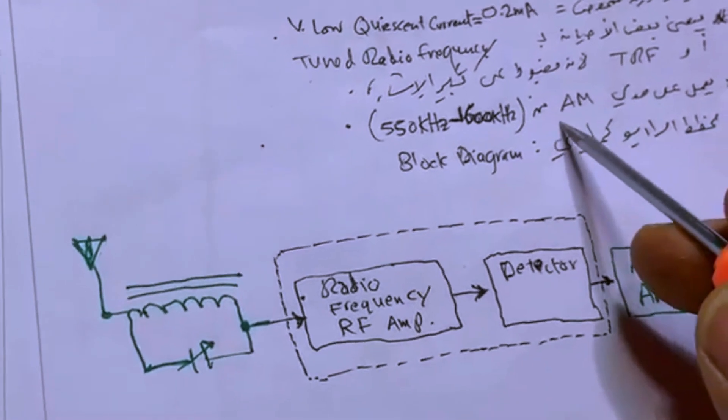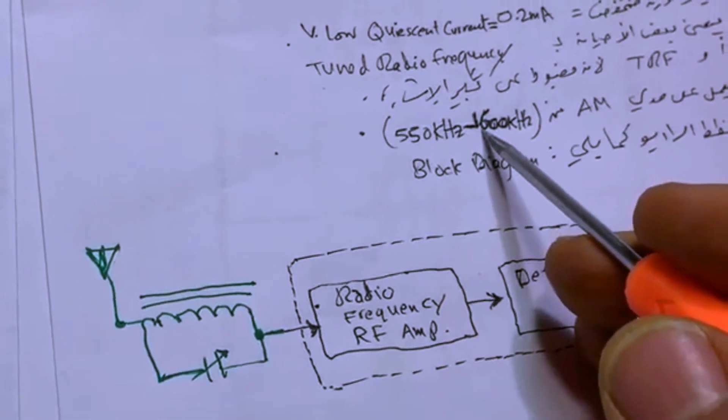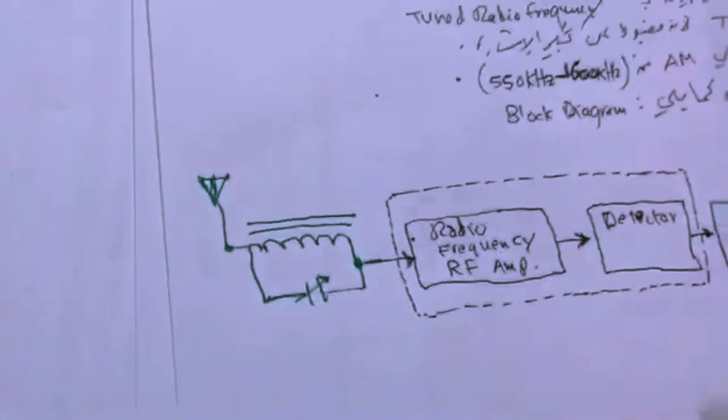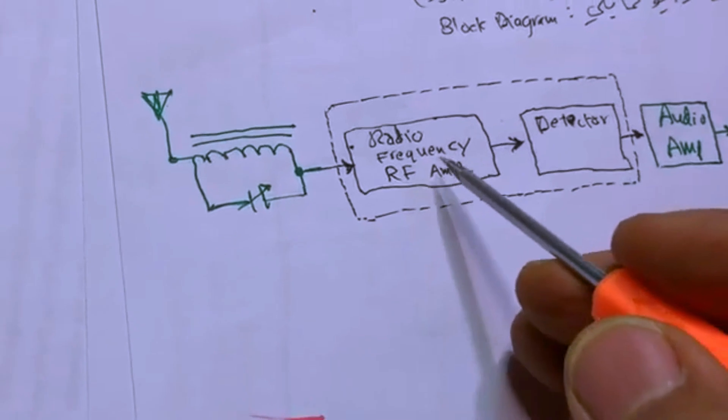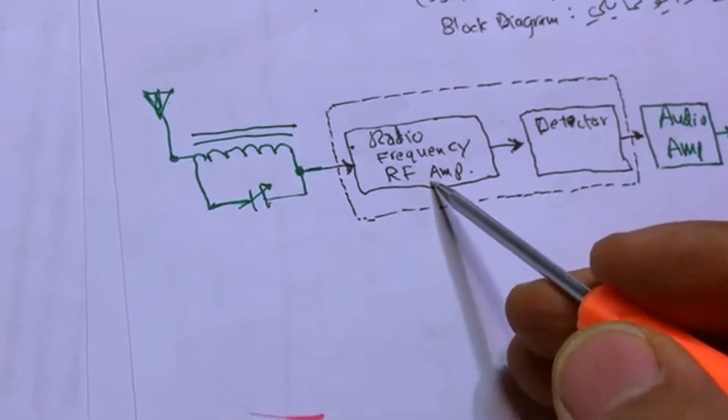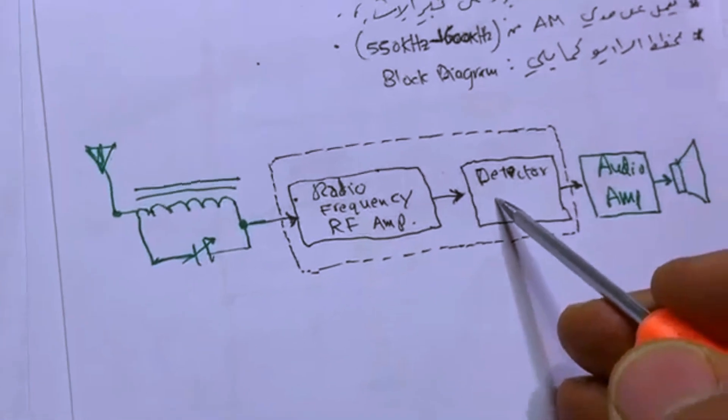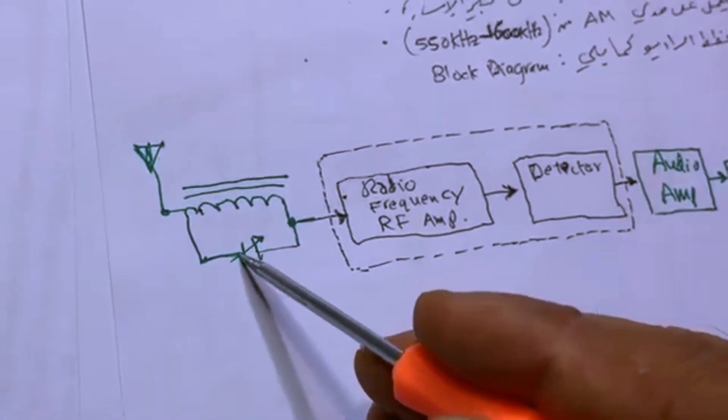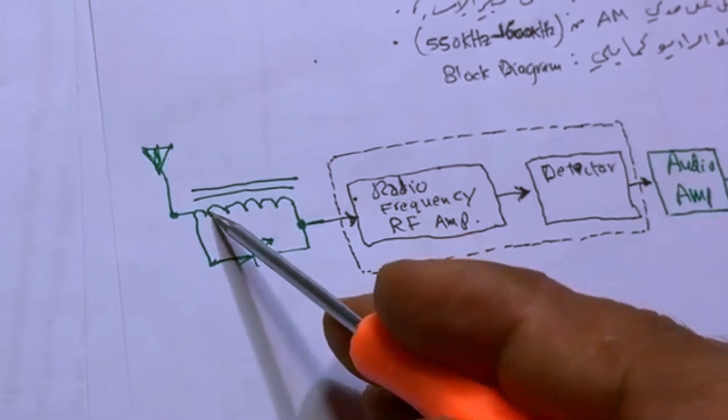It works on this range 550 kilohertz to 1600 kilohertz. Here's the block diagram. This is our integrated circuit and it has inside the RF amplifier, radio frequency amplifier and a detector. Then you have to provide a capacitor, variable capacitor with a coil, this is the RF coil.